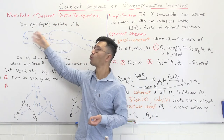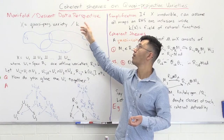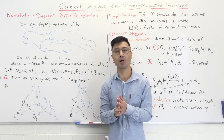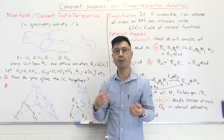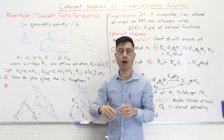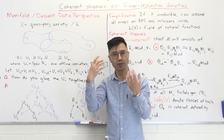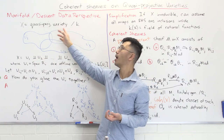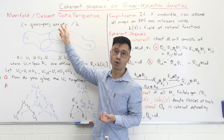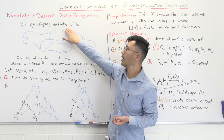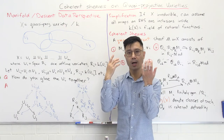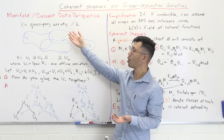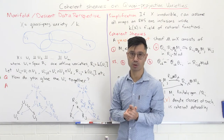Let X be some quasi-projective variety over some algebraically closed field K. In other words, you look inside projective space and you look at some open subset of a closed subset of that projective space — that's a quasi-projective variety. Some people like to also add the condition that this locally closed subset is also irreducible, which is quite common as well.